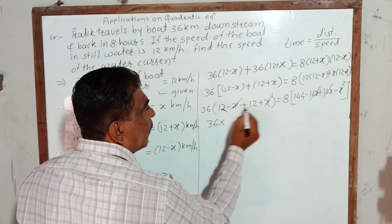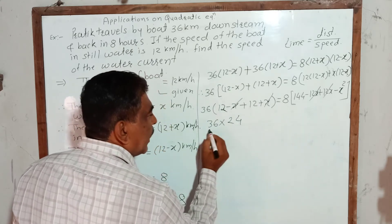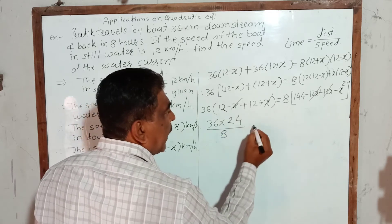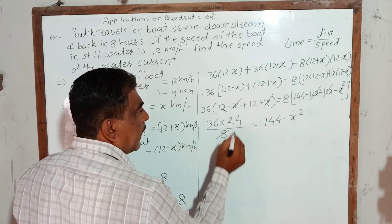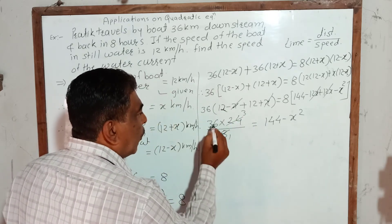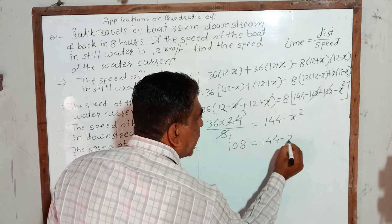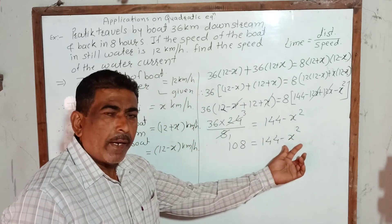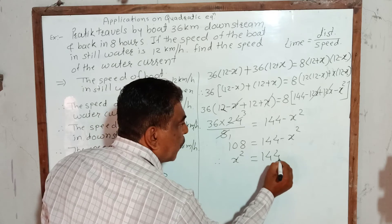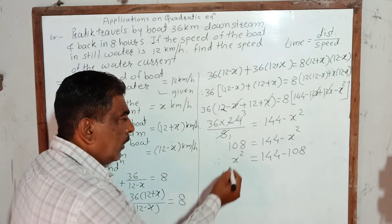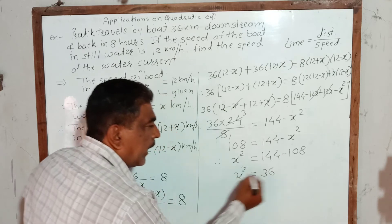So we get 36 into 24 equals 8 into (144 minus x²). Dividing both sides by 8: 36 into 3, which is 108, is equal to 144 minus x². Changing sides, x² is equal to 144 minus 108, which is 36. Taking the square root, x is equal to plus or minus 6.